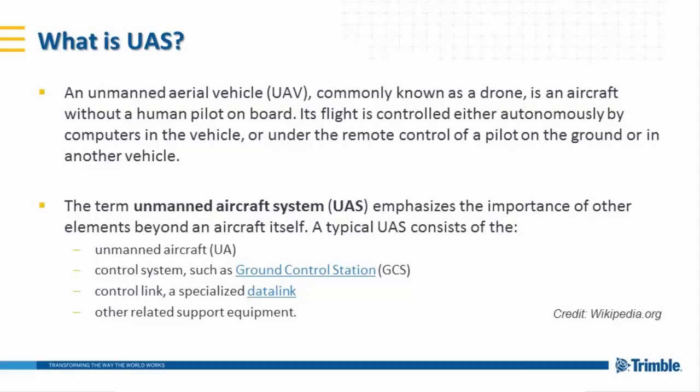Everyone on the call may not be fully aware of the differences between just a drone aircraft and a complete UAS. The biggest difference is the S — they're an unmanned aircraft system. It consists of not only the aircraft, but a control system such as the ground control station, a control link or specialized data link, and other related supporting equipment — software launchers, control devices. An unmanned aircraft system is a complete, fully functional system allowing the capture of sensor data, in our case imagery, the processing of said data, and its final delivery or use as a product.